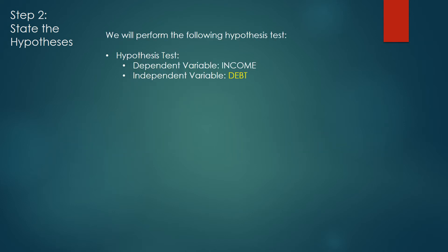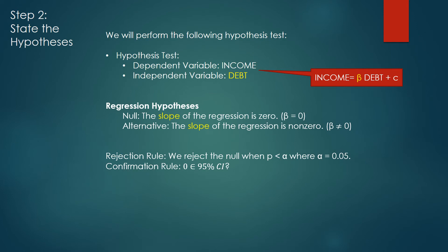Now, let's take everything we figured out thus far and put it to work. So far, we figured out the dependent variable's income and the independent variable's debt. We know that from the previous slide. We also know the hypotheses for regression.